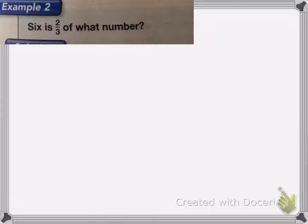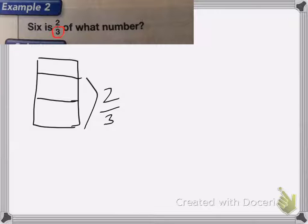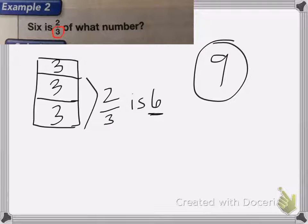The next problem is: six is two-thirds of what number? Again, I draw a diagram divided into thirds because the denominator is three. Two-thirds equals six, so I put three in each of those two boxes because three plus three is six. If there are three in those two boxes, there must be three in the third box as well. The total is three times three, which is nine. So six is two-thirds of nine.